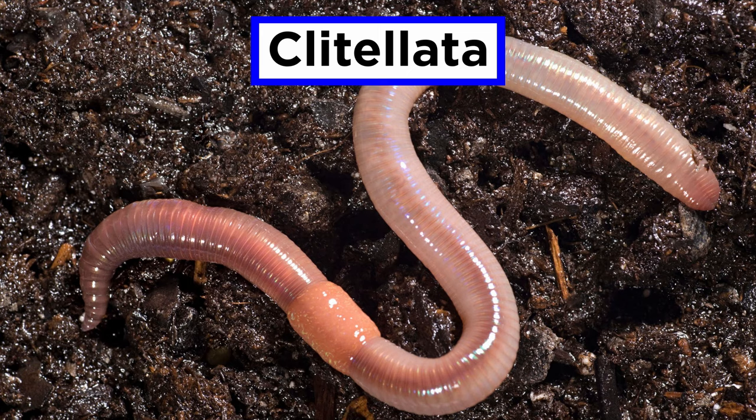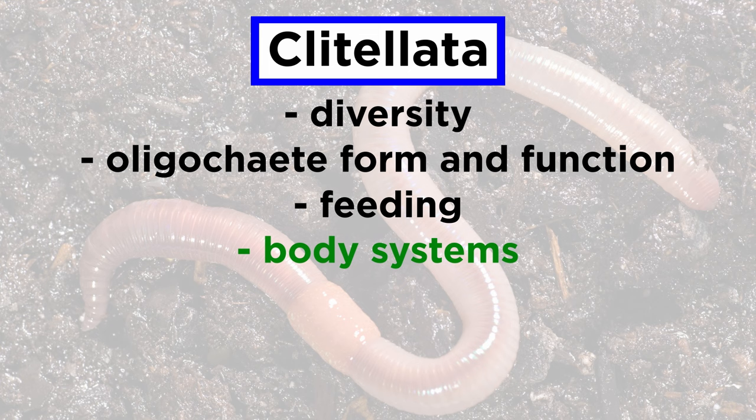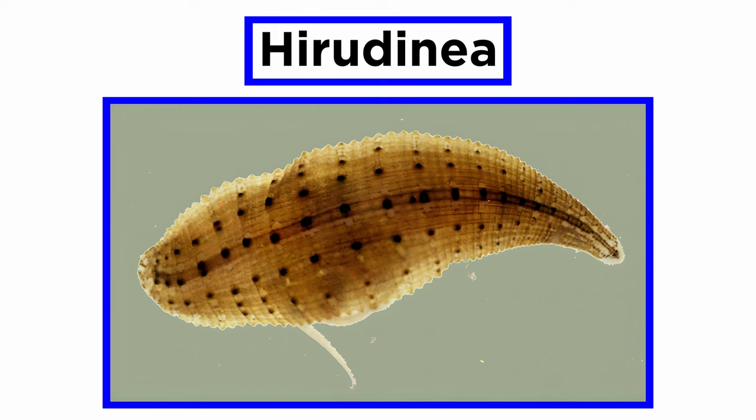In order to cover Clitellata, we will examine their diversity, oligochaete form and function, feeding, body systems, behavior, reproduction and development, and their ecological significance. We will then conclude by going over class Hirudinida, the leeches.